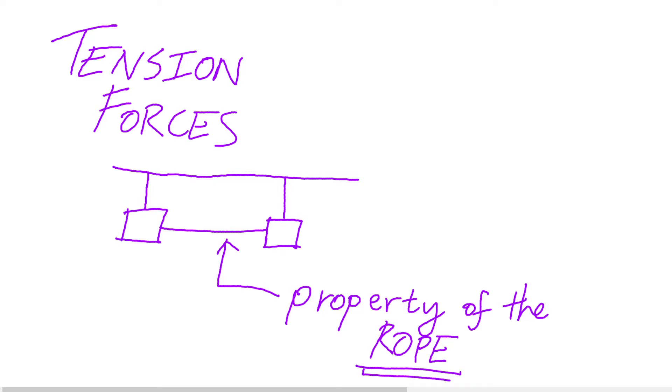The most important thing to know is that a tension force is a property of a rope. Each individual rope in a situation will have a given tension force that is applied to the bodies at the end of the rope and directed in whichever direction the rope is currently pointing as it is attached to the body.